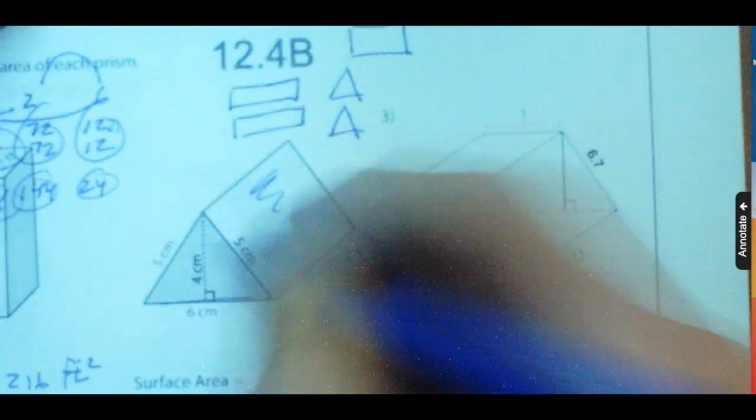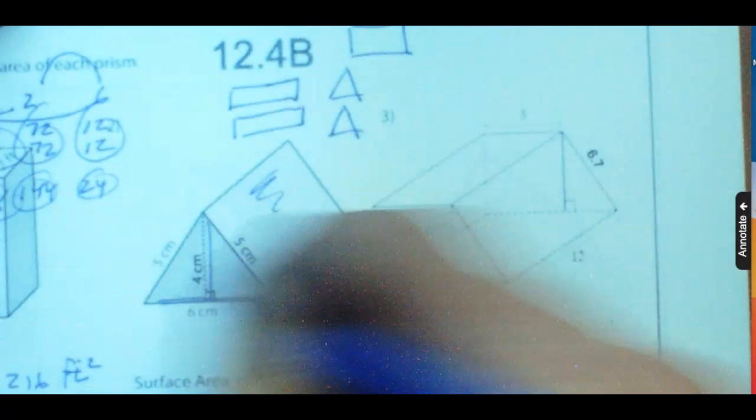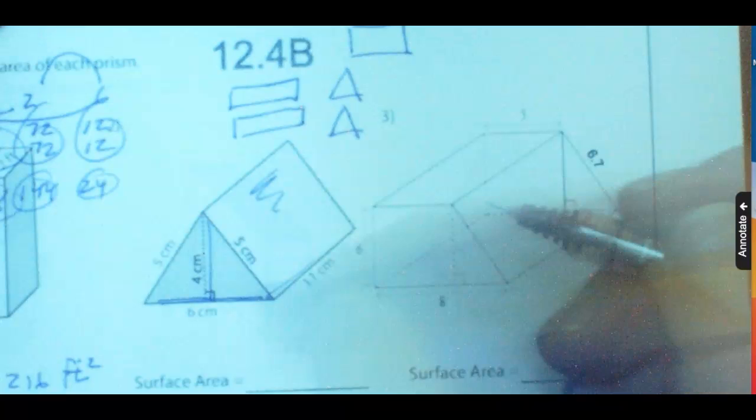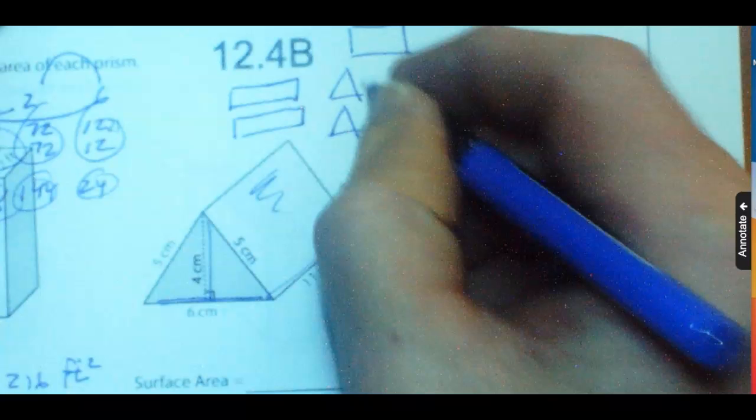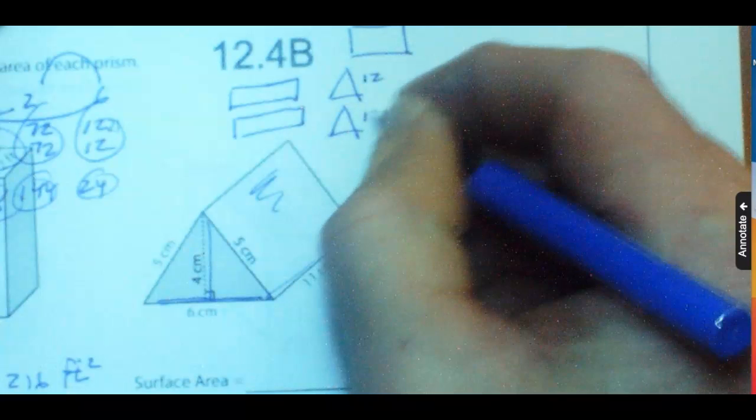Remember, for these triangles, it's going to be base times height divided by two. So this is 6 times 4, which is 24, divided by two. These are each going to be 12.